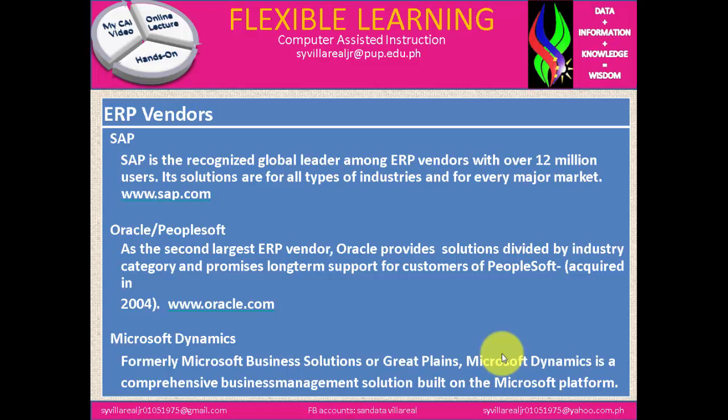Next is Oracle PeopleSoft. As the second largest ERP vendor, Oracle provides solutions divided by industry category and promises long-term support for customers of PeopleSoft, which it acquired in 2004. You can check it out at www.oracle.com. Next is Microsoft Dynamics, formerly known as Microsoft Business Solution or Great Plains. Microsoft Dynamics is a comprehensive business management solution built on the Microsoft platform. Note that SAP and Oracle generally require online connectivity for integration — without it, there is no integration possible.